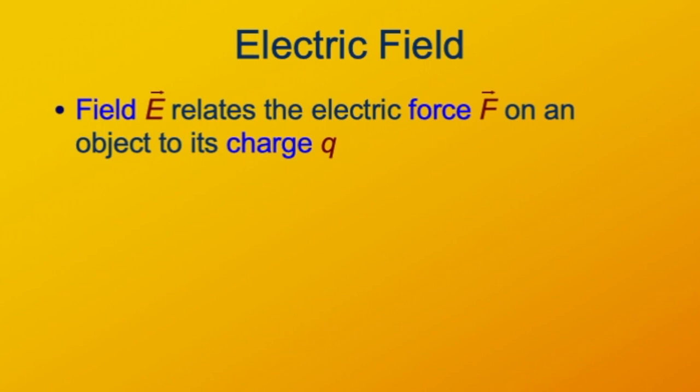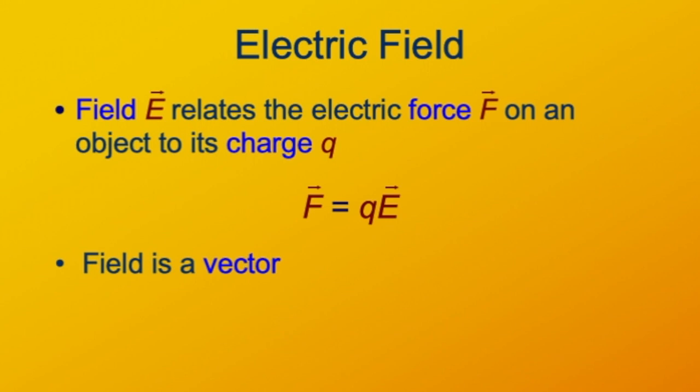The electric field relates the electric force on an object to its charge. The force on the object is equal to the charge of the object times the electric field in which it finds itself. As shown by the arrows, force has to be a vector because force is a vector. Charge is not a vector — charge is a scalar. Electric field must be a vector because you multiply a scalar times something to get a vector, and that something has to be a vector.